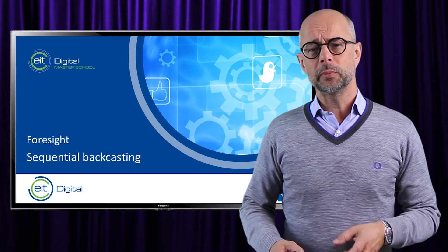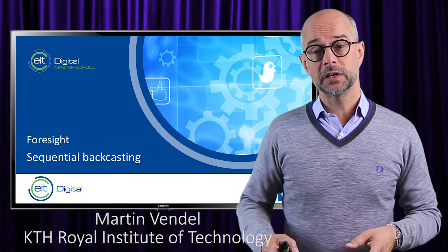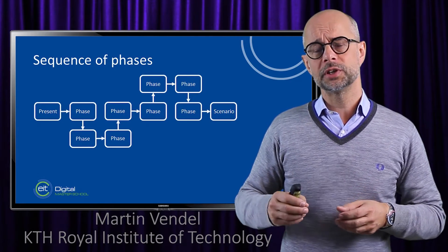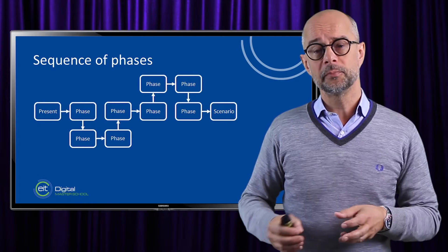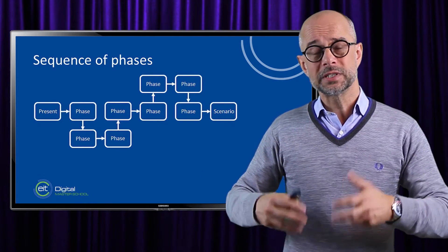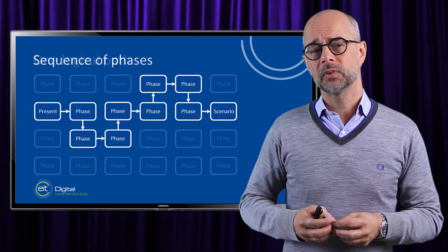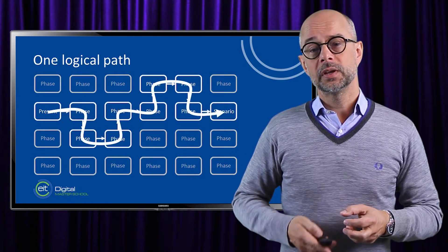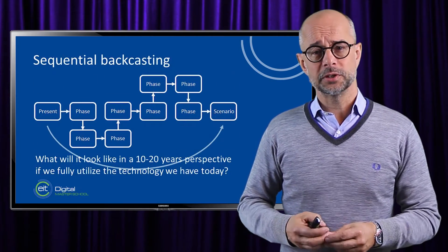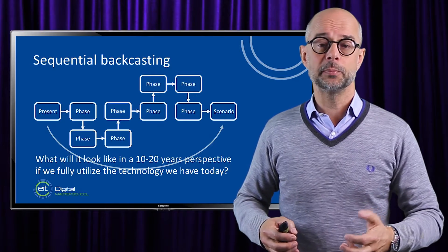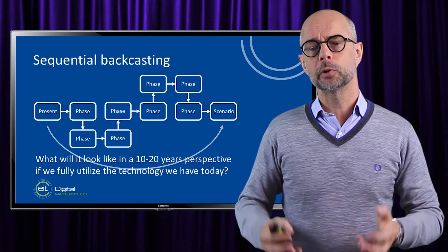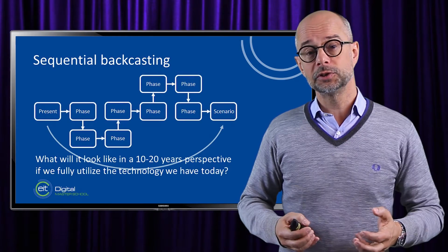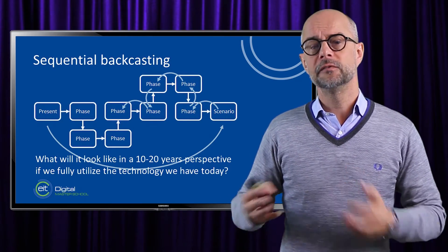Sequential backcasting is a new method where we try to estimate the impact of a specific technology on a defined system. In sequential backcasting we divide the development towards one specific expected scenario into a sequence of phases and then look at what's needed for each phase to happen. We find one logical path from where we are today to that expected scenario. The scenario is estimated by answering the question: what would the specific system look like in a 10 to 20 year perspective if we fully utilize the technology we already have today? One could say that we forecast the scenario based on existing technology and then stepwise backcast the development to that scenario.